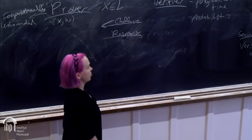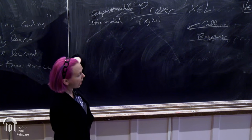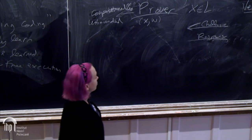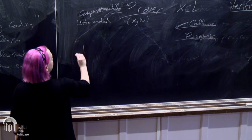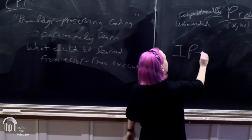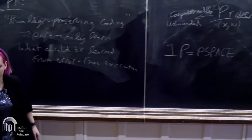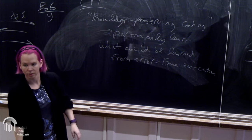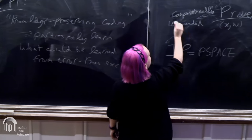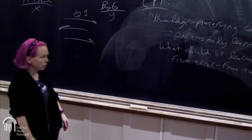The complexity theory question is: what is the class of languages that have an interactive proof system with this completeness and soundness? The result is that this class — denoted IP for interactive proofs — equals PSPACE. Every language decidable in polynomial space has an interactive proof. It is required for the prover to be computationally unbounded; otherwise this would collapse to NP.